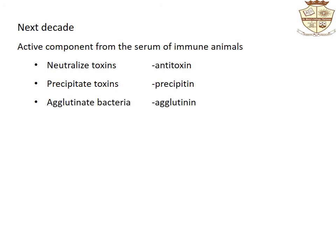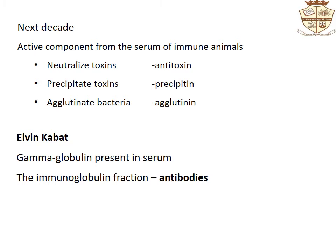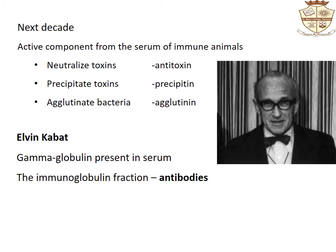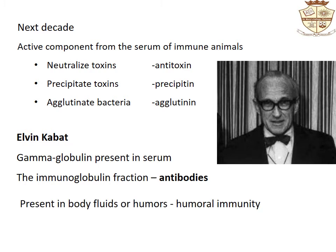Various researchers during the next decade demonstrated that an active component from the serum of immune animals is capable of neutralizing toxins, precipitating toxins, and agglutinating bacteria. These were termed antitoxin, precipitin, and agglutinin respectively. During the 1930s, Elvin Kabat showed that gamma globulin present in serum is responsible for these activities. This active molecule is known as antibodies. Since the immunity mediated by antibodies is present in body fluids or humors, it was called humoral immunity.